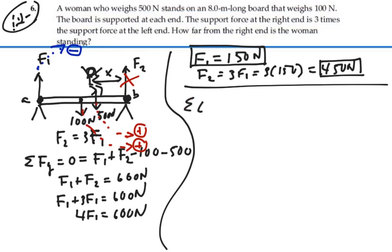So our summation of all the torques about B is 0 because it's not rotating at all. And what do we have? We've got X times 500 plus halfway through the beam is 4 meters, so we're going to have 4 times 100 minus 8 meters times F1.